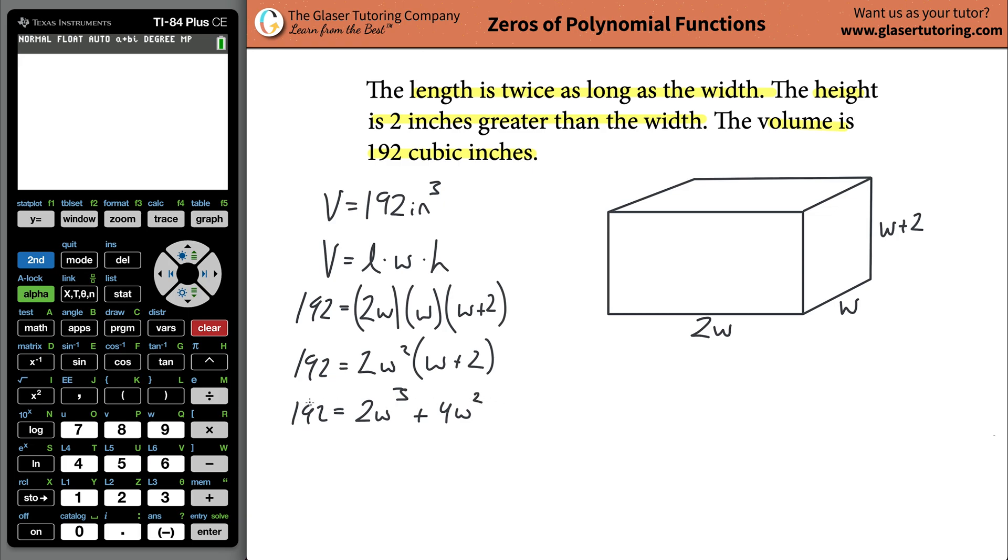I'm thinking about algebra and I have no idea how to solve this. What I want to do is set this equal to 0. We can subtract the 192 from the left to the right. What we're left with is 2w cubed plus 4w squared minus 192 equals 0. What I want to find is the values of w that make this whole side equal to 0.